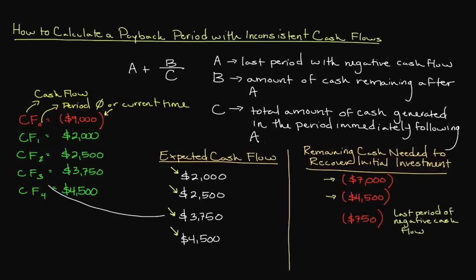We know that our payback period is going to be somewhere between 3 and 4 years. B represents the amount of cash remaining at the end of A. Since A is period 3 and the corresponding remaining cash is $750, B equals $750. C is the total cash generated in the period immediately following A, which is $4,500 since we expect to receive $4,500 in year 4.